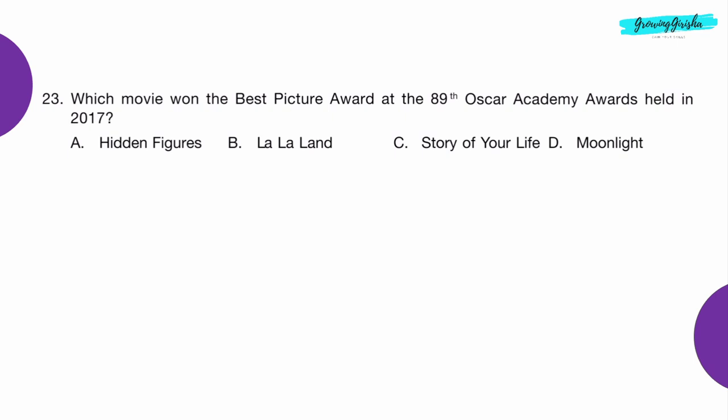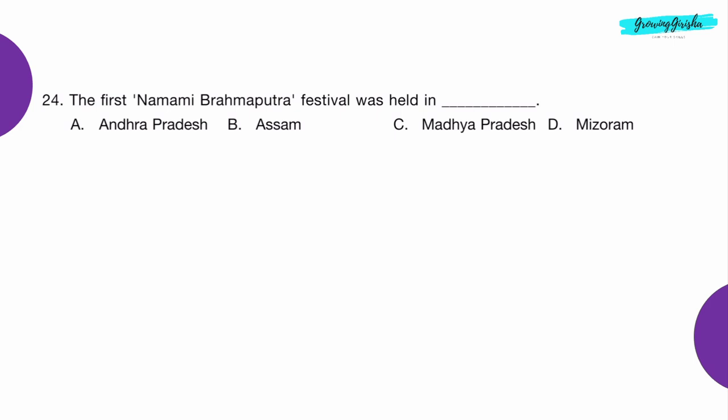Question 23: Which movie won the Best Picture Award at the 89th Oscar Academy Awards held in 2017? Option D: Moonlight.